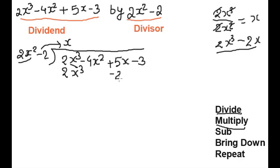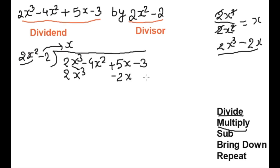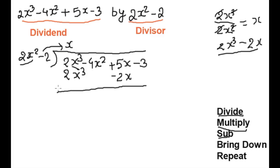We write minus 2x below 5x, because the degree of both terms is the same — both are degree 1. We put same-degree terms in the same place so it will be easy for us to subtract. Now we follow the next step, which is subtract.